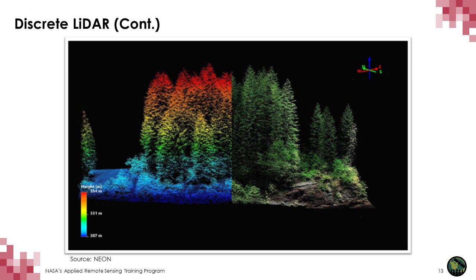Many airborne and terrestrial LiDAR systems are discrete. Here we have an example of a discrete LiDAR point cloud of a forest, which can be made up of millions to billions of points. The points are classified into different heights according to return placement — first returns reaching the sensor first are usually from the top of the canopy, and the last return is usually the ground, but not necessarily, depending on the density of the vegetation. That last return can come from somewhere in the understory as well.